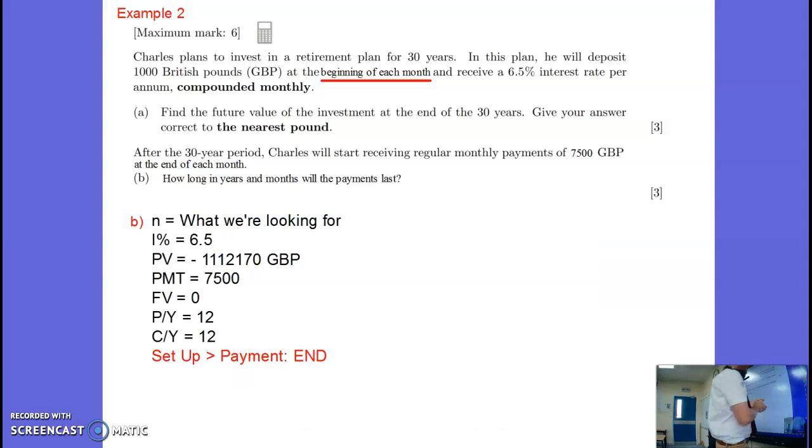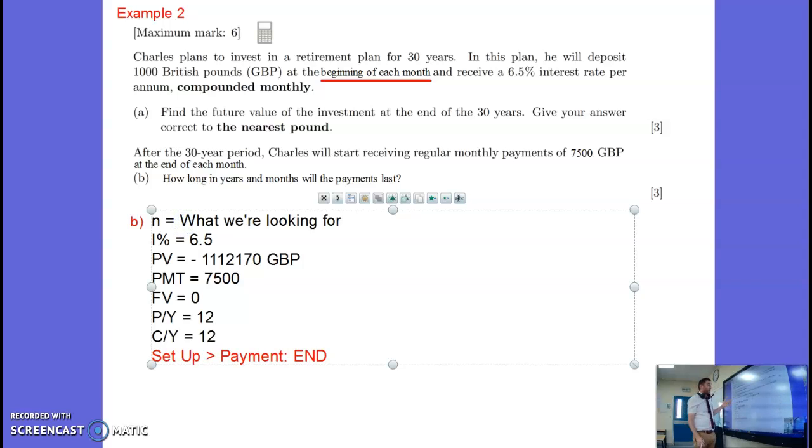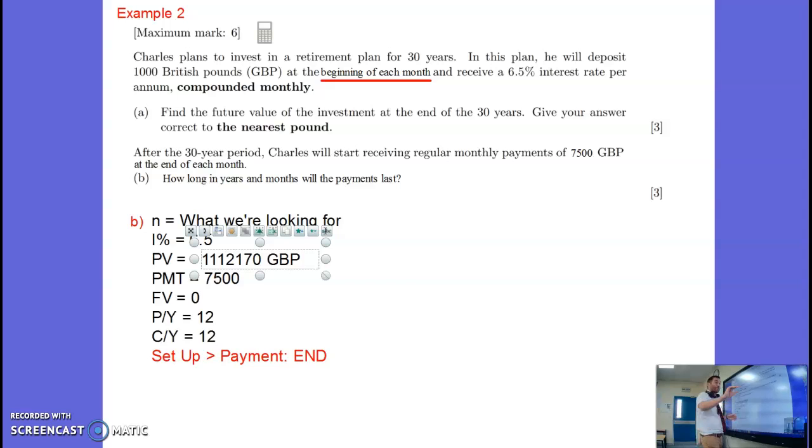How long in years and months will those payments last? Well, let's get that calculator out, stick the things in that we know. N, we're looking for how long, so how many periods, how many months. I percentage, we've got 6.5. The present value, this £1,000,000 is in the bank, so it's a negative.